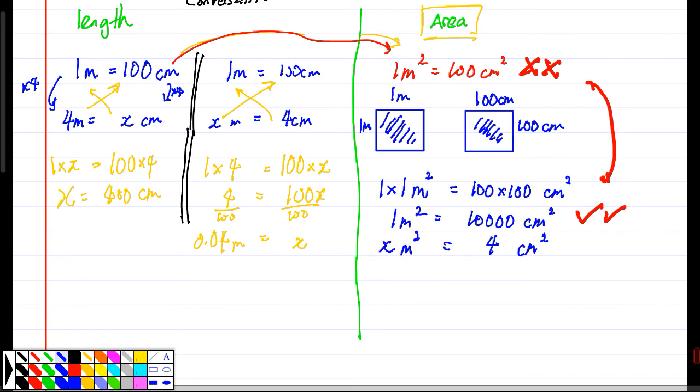So what we do is we multiply upwards. This is 10,000X, and we multiply upwards, this is 1 times 4. So X equals 4 over 10,000.